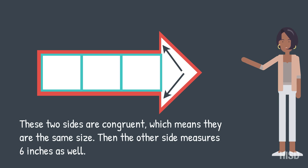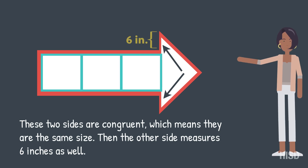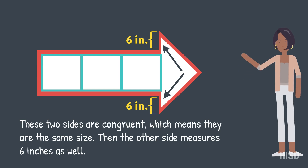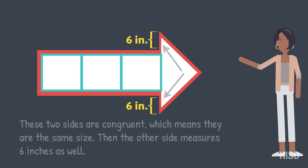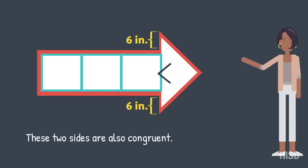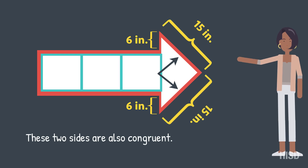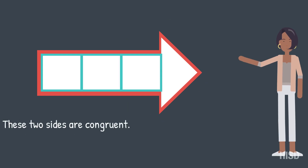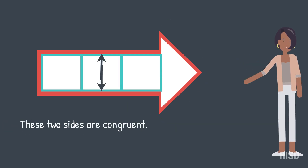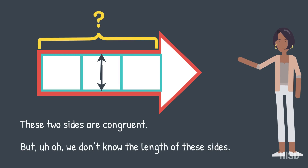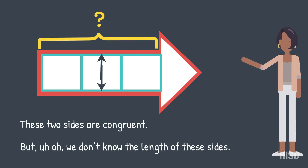These two sides are congruent, which means they are the same size. Then the other side measures six inches as well. These two sides are also congruent. These two sides are congruent, but we don't know the length of these sides.